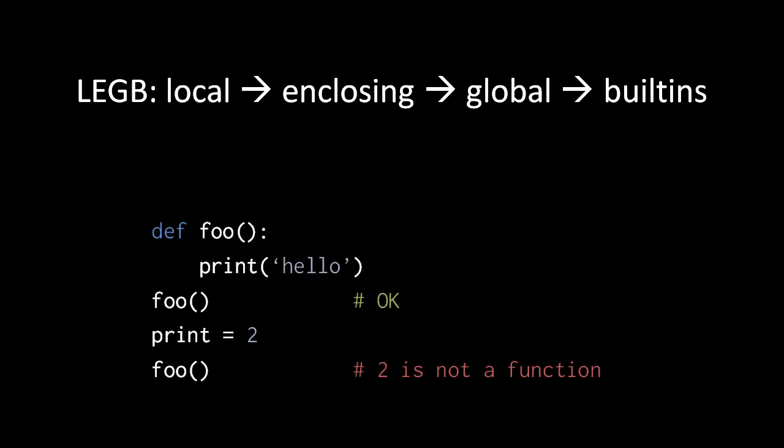Very briefly, we can see this happening in action. Here's a function foo which invokes print from the built-ins module, and if we invoke foo the first time, that's okay, it prints hello. But then, if in that module we assign to print some number, something which is not a function, and then we try and invoke foo.